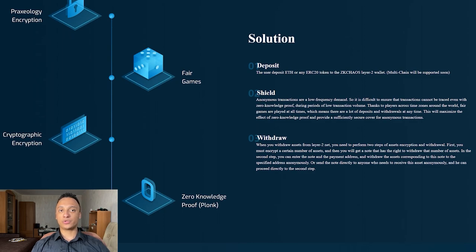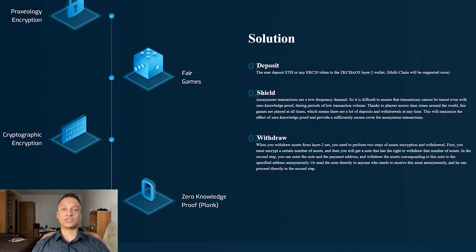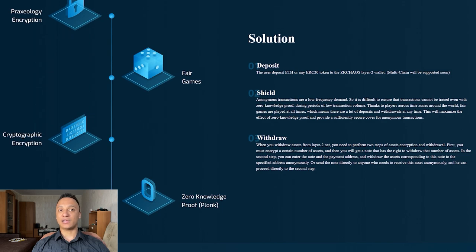When you withdraw assets from the Layer 2 network, there are two steps of asset encryption and withdrawal. First, you must encrypt a certain number of assets, and then you will get a note with the right to withdraw the encrypted assets. After entering the note and the payment address, you can withdraw the assets corresponding to this note to the specified address anonymously.